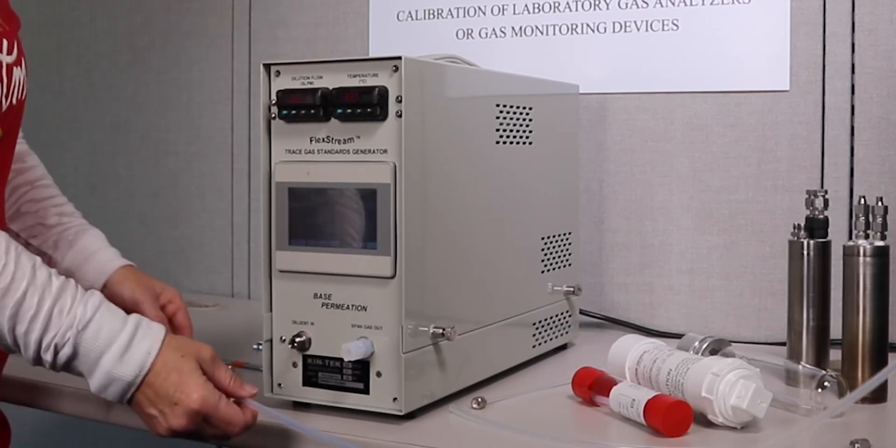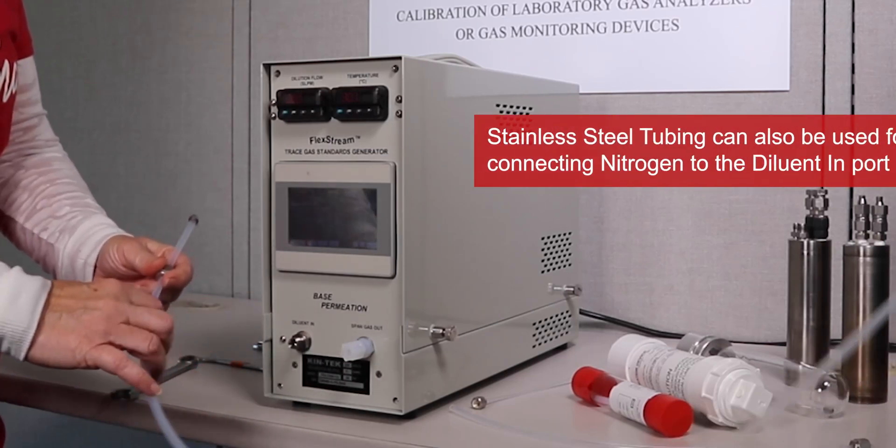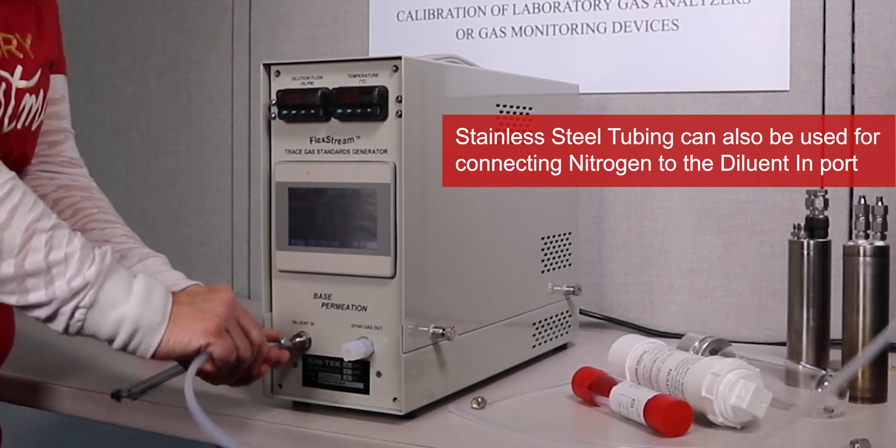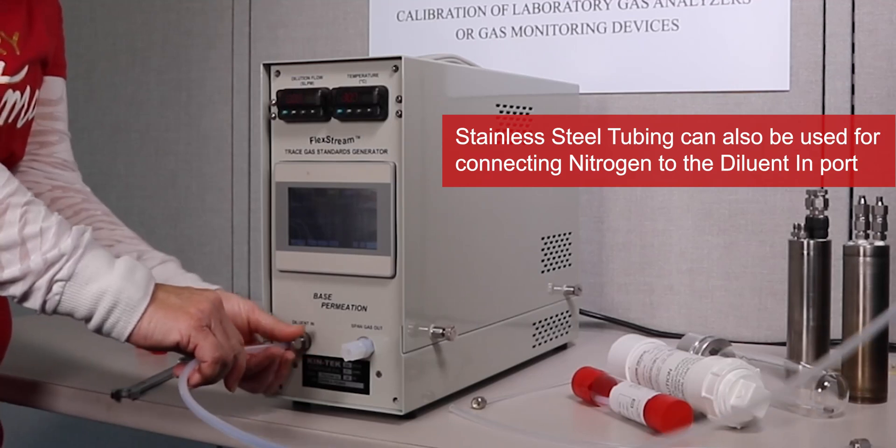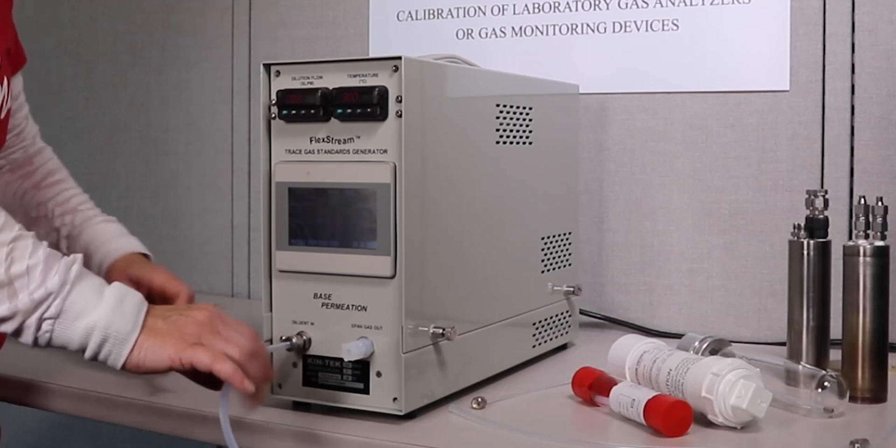Then we have a quarter inch Teflon tubing coming from our nitrogen cylinder. Our nitrogen cylinder again is set at a little bit above 60 psi. I'm going to connect that to my diluent in port using a 9/16 wrench to tighten it.